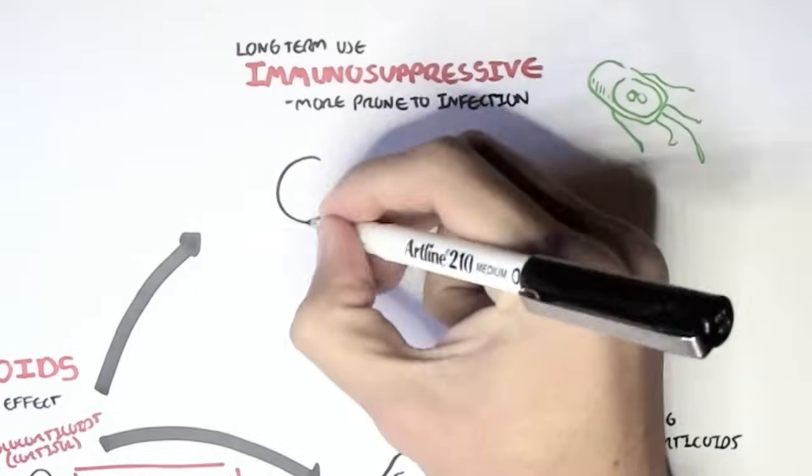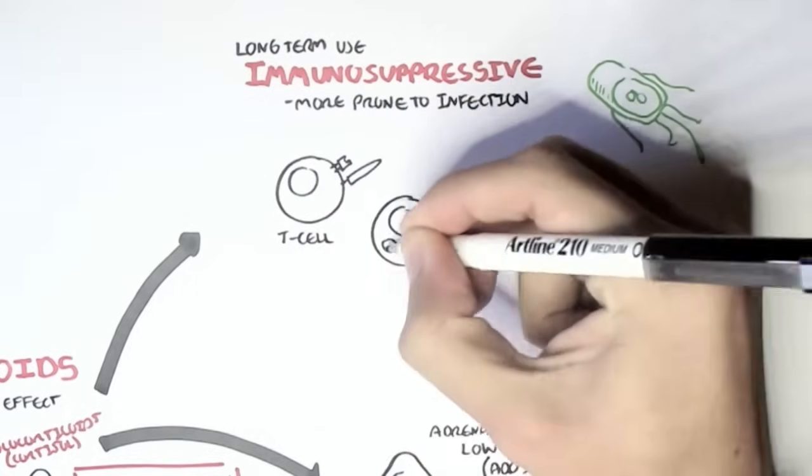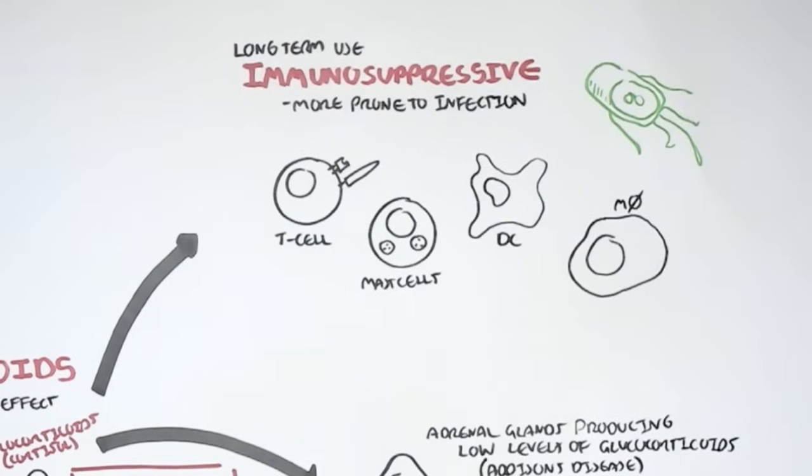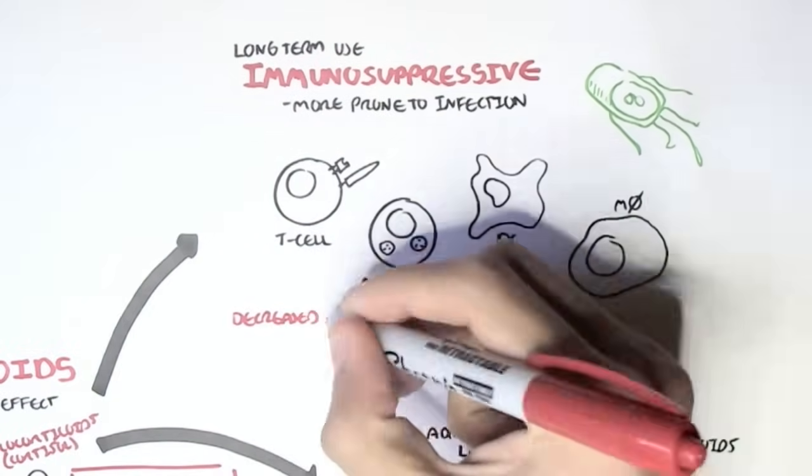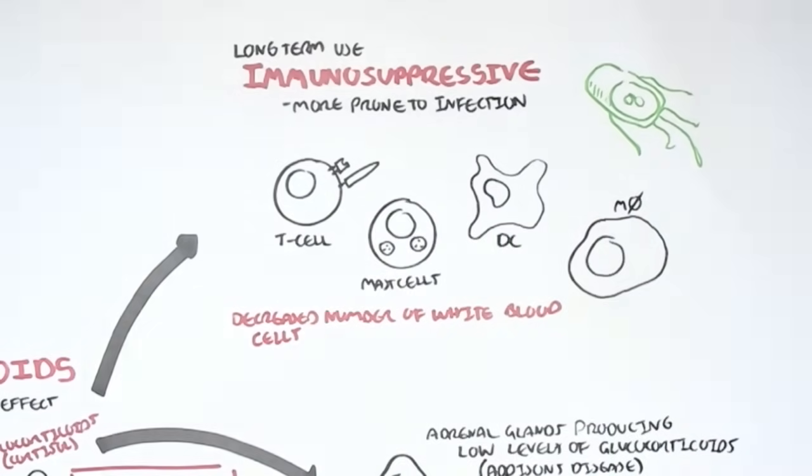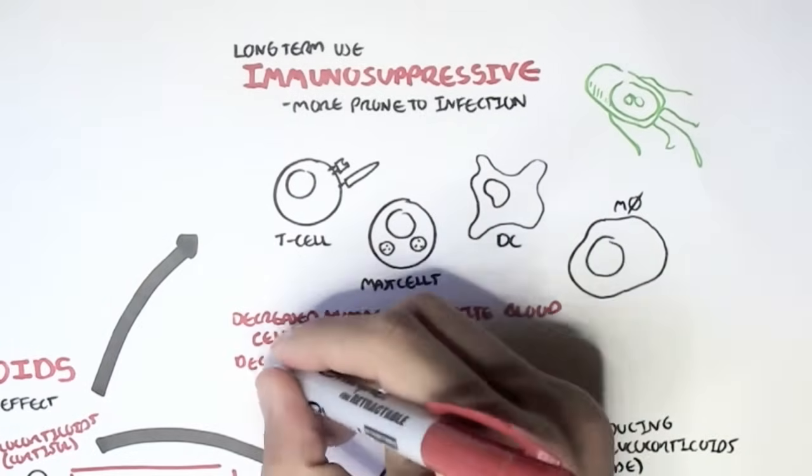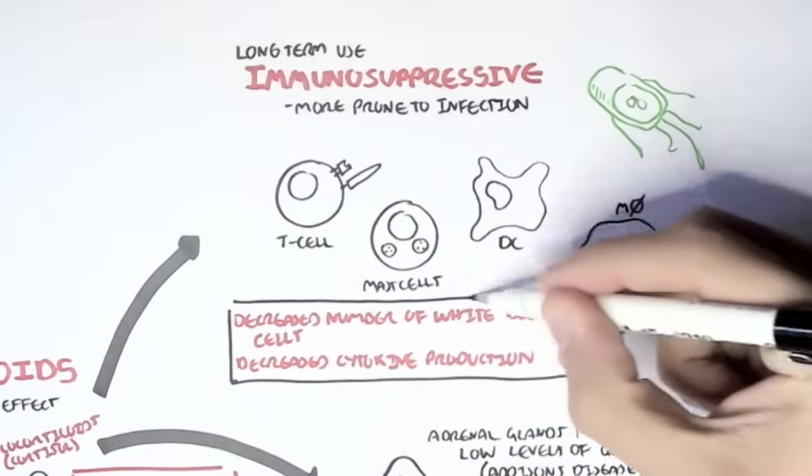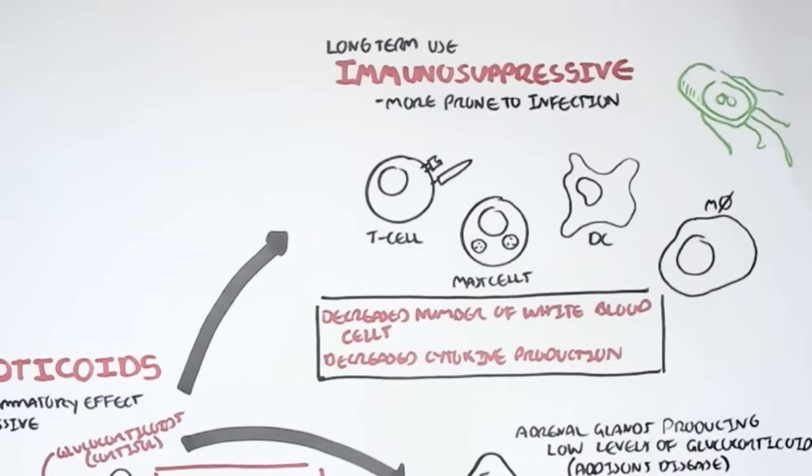So, for example, here we have all the white blood cells, some white blood cells, the T cells, macrophages, dendritic cells, and macrophage. Using glucocorticoids for a long time essentially decreases the number of white blood cells and the production of these cells. And this is related to the decreased cytokine production as well, because remember glucocorticoids reduce the production of inflammatory mediators.